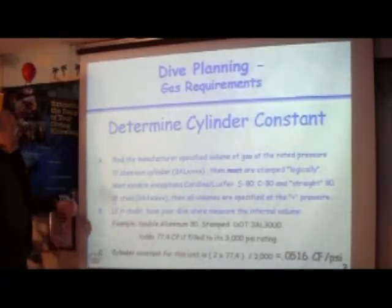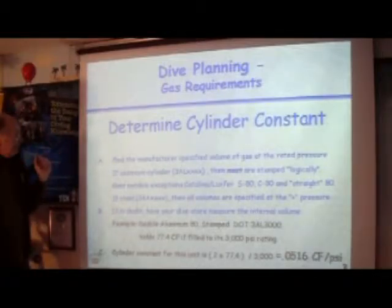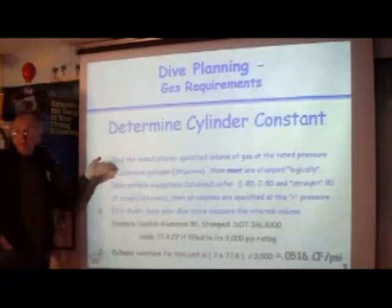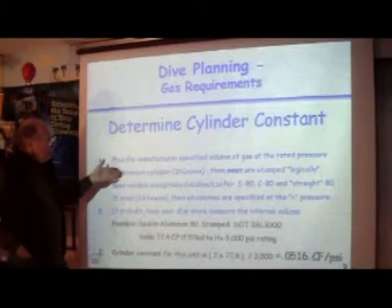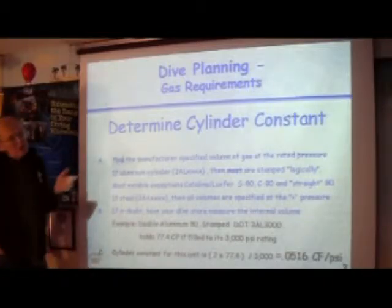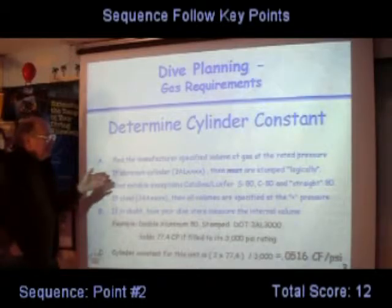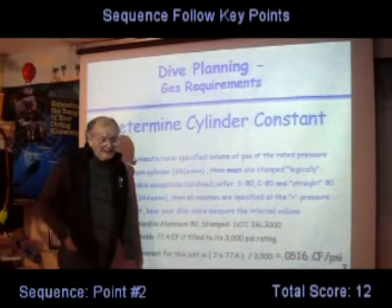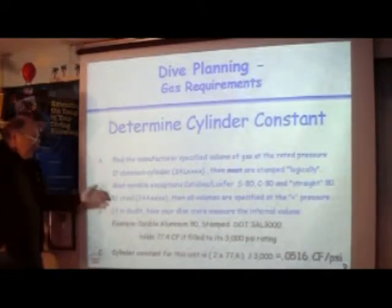The first thing we need is the cylinder constant. We find the manufacturer's specified volume, and if it is an aluminum cylinder, most of it is stamped. But if it is a Catalina S80, C80, a straight 8, or a Luxford Ditto, there may be some differences. If it's a steel cylinder, it's another story. If you're in doubt, have your local dive store measure the internal volume.